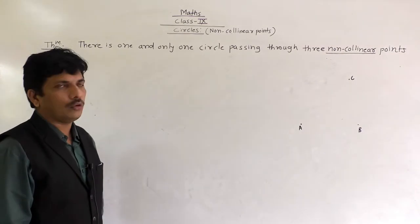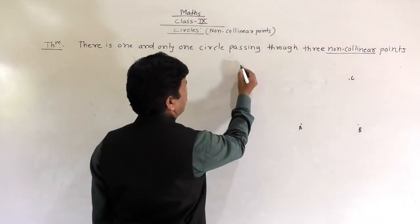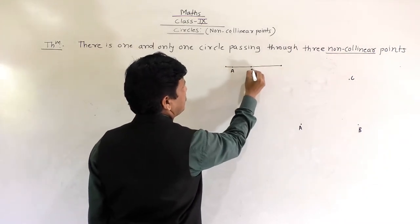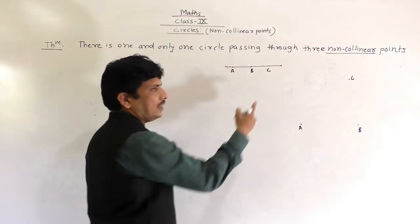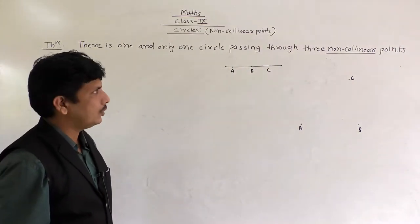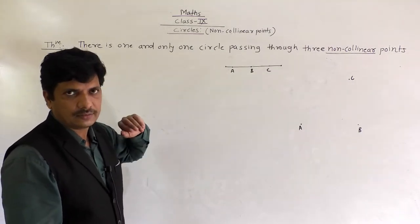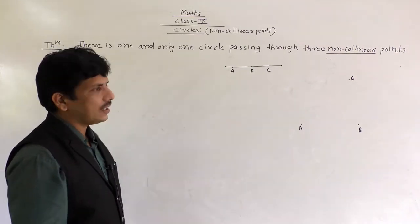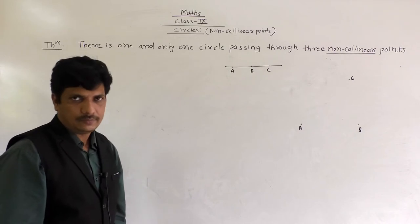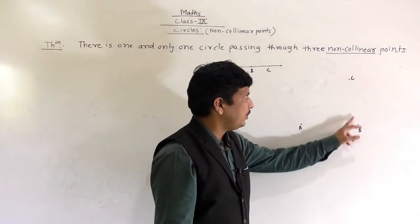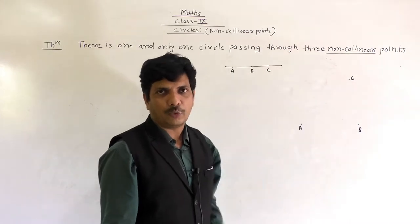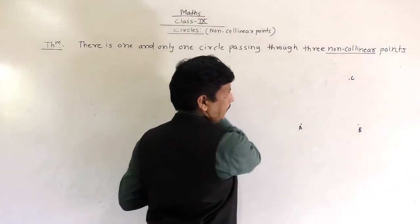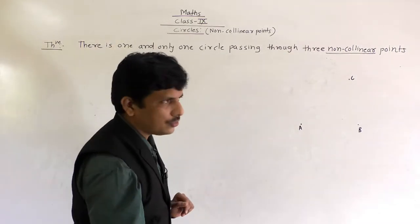Collinear points means points which are lying on the same line or straight line. Suppose point A is here, B is here, and C is here — so we can say A, B, C are collinear because all three points are on the straight line. Non-collinear means the opposite: A, B, and C are not on the same line.